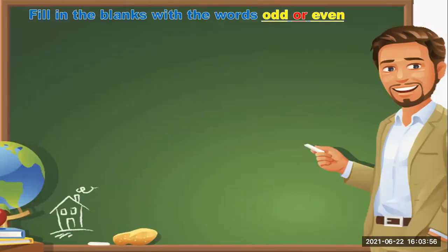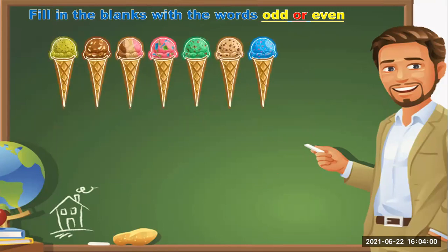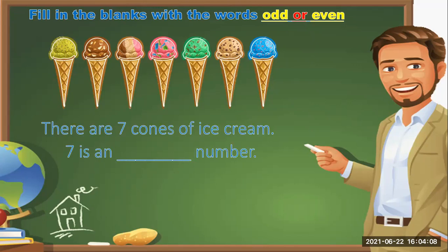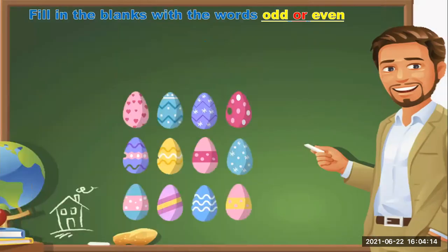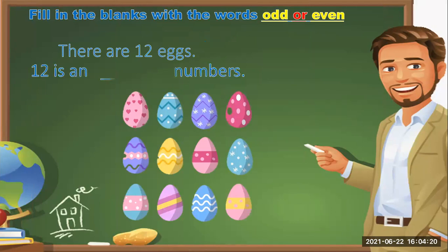Now let us fill in the blanks with the words odd or even. As you can see here in the picture, there are seven ice cream cones. Seven is an odd number. Here, as you can see, there are twelve eggs. Twelve is an even number.